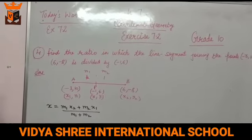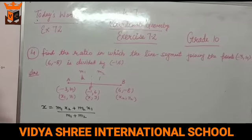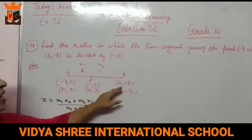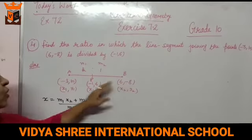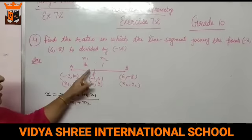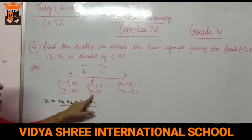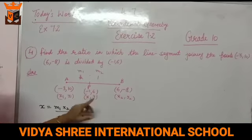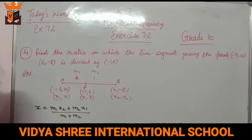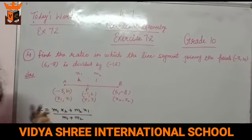Now this is question number 4. Find the ratio in which the line segment joining the points is divided by (-1, 6). Ye do point hain: minus 3, 10 aur doosra hai 6, minus 8. Kehta hai in donon points ko join karne wali ye line ho gayi AB, aur divide kiya gaya hai point P se. Point P hai (-1, 6). Means x, y. Toh aapko ratio nikalna hai. Jab bhi humne ratio nikalna ho, toh hum usko maan lete hain k ratio 1. Toh k ho gaya M1, 1 ho gaya M2.